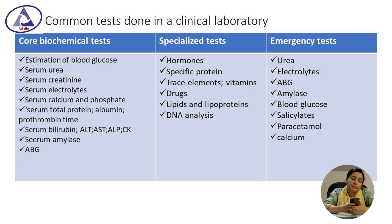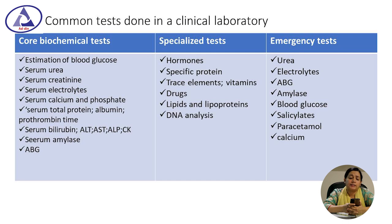The general body checkup — or core biochemical test — is recommended for estimation of blood glucose, serum urea, serum creatinine, serum electrolytes, serum calcium and phosphate, serum total protein, serum bilirubin, LDH, AST, ALP, creatine kinase, serum lipids, and arterial blood gas analysis.